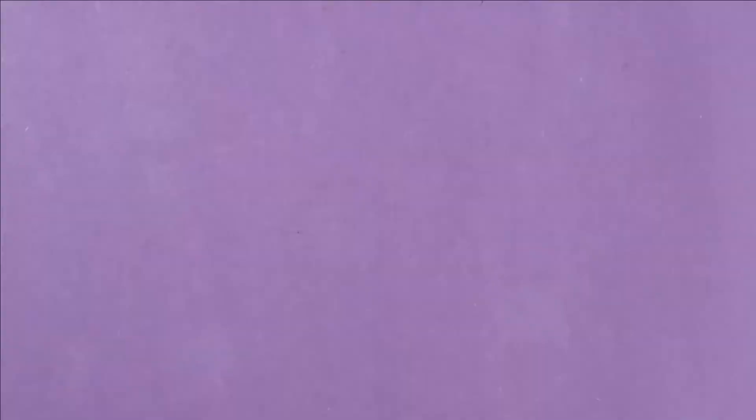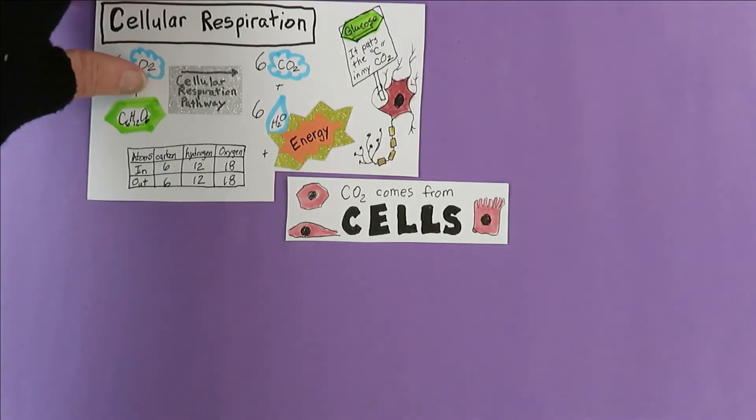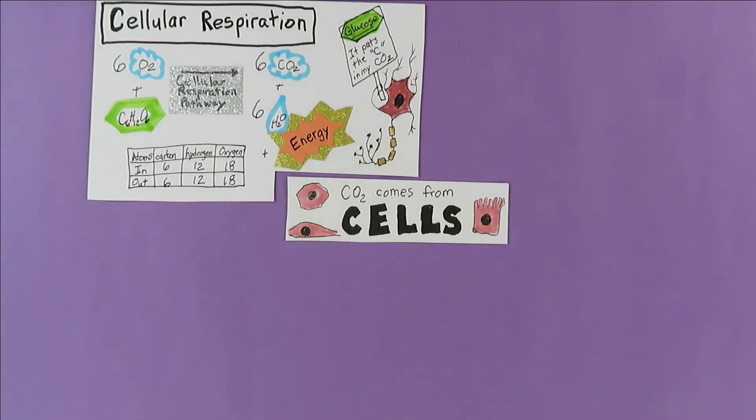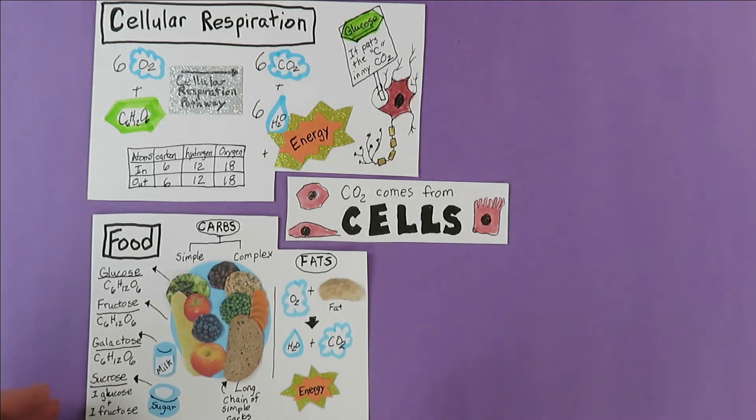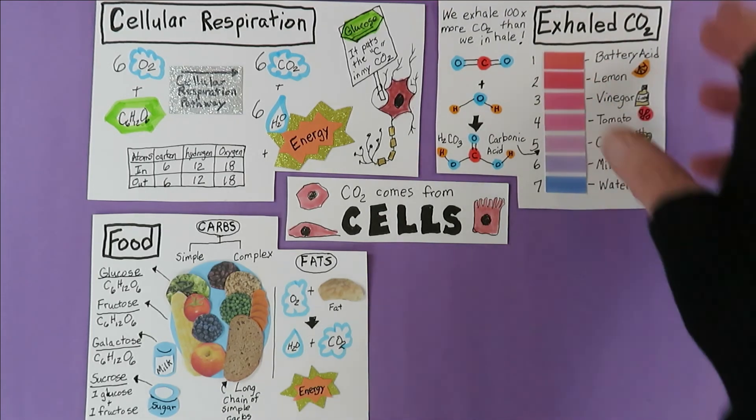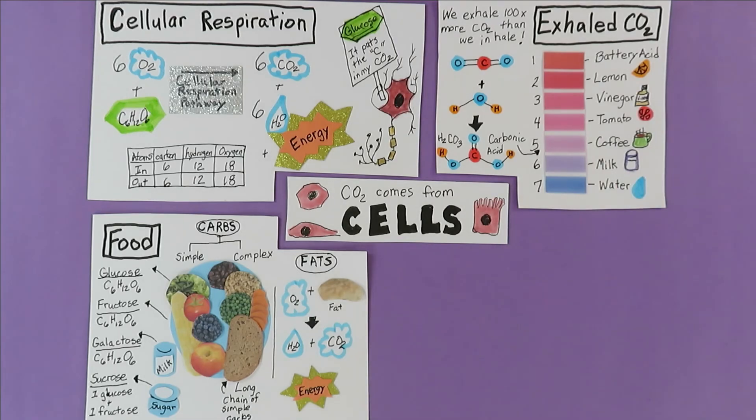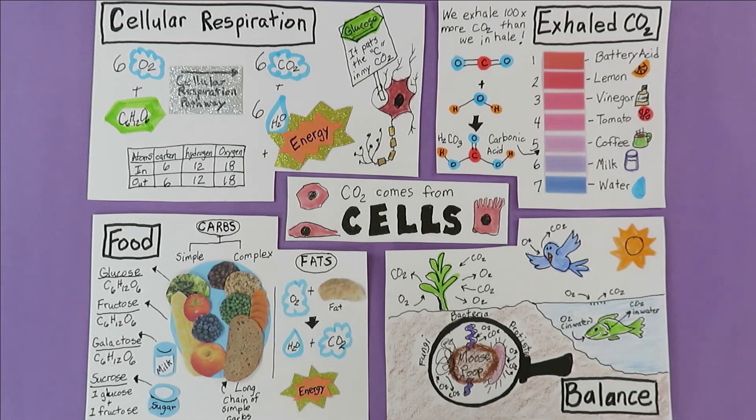Let's recap. You are made of cells that use oxygen and food to get energy via the cellular respiration pathway. Glucose can enter the pathway through the front door. But other foods can enter through side doors. What comes out is carbon dioxide, water, and chemical energy. We exhale about 100 times more CO2 than we inhale. But the CO2 from cells does not cause climate change.